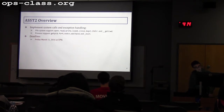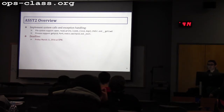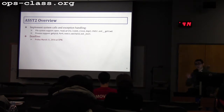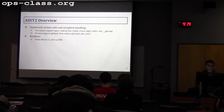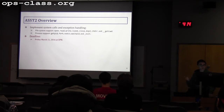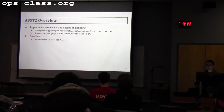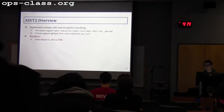Assignment two overview: it involves implementing system calls and exception handling. When something goes wrong, system calls need to return an error value — you must handle all kinds of errors. There are two types of system calls to implement: file system support and process support. File system support includes open, read, write, lseek, close, dup2, change directory, and get current working directory. For process support: get process ID, fork, execv, waitpid, and exit.